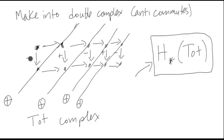We also want to alternate signs throughout so that we can modify the diagram so that things anti-commute. If I go this way, it will be the opposite sign as if I go this way in the map. The reason I want to do that is because it lets us get another complex out of this with the double differential being zero.